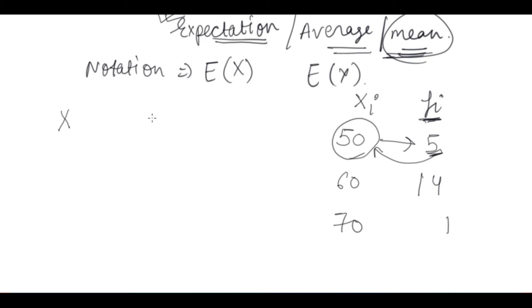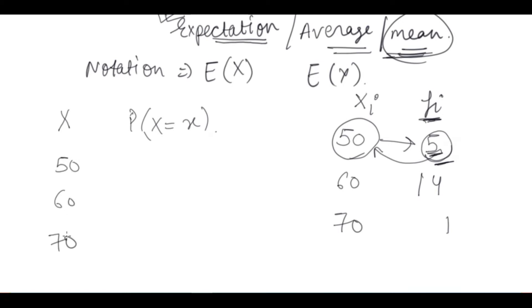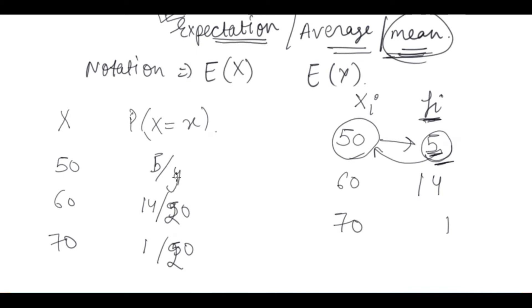Now we write f_i differently — we write it as a probability. What is the difference? If the value occurs 5 times, we need to get the probability of those marks. So for 50 marks, the probability is 5 out of 20, which is 5 by 20. Similarly for 60 marks it would be 14 by 20, and for 70 marks it would be 1 by 20. If we add all these up, the sum of probabilities is 1.